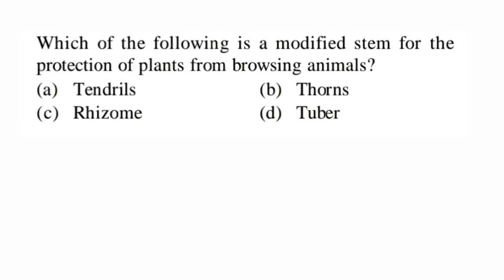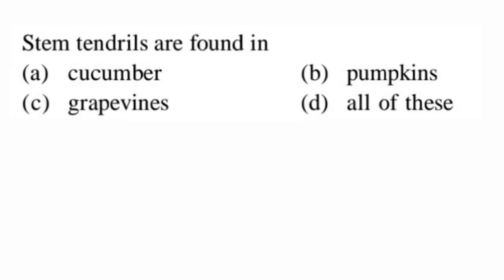Next question: which of the following is a modified stem for the protection of plants from browsing animals like cattle, sheep, and goat? Option A — tendrils — no, they help the plant to climb. Option B — thorns — yes, they are mainly for protection. Rhizome is a modified root type, and tuber like potato is for storage. So option B, thorns, is correct.